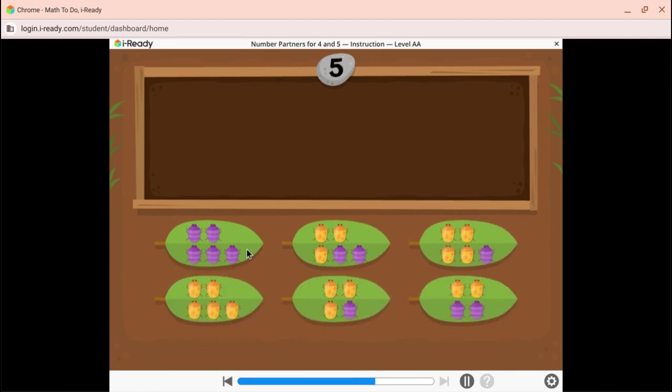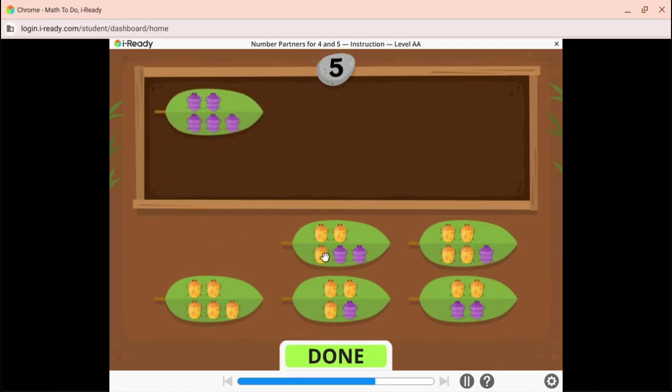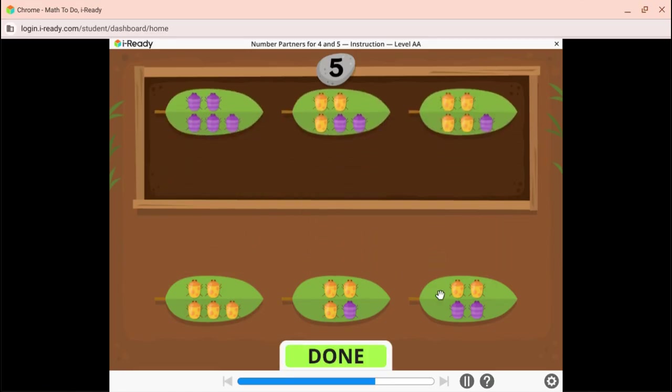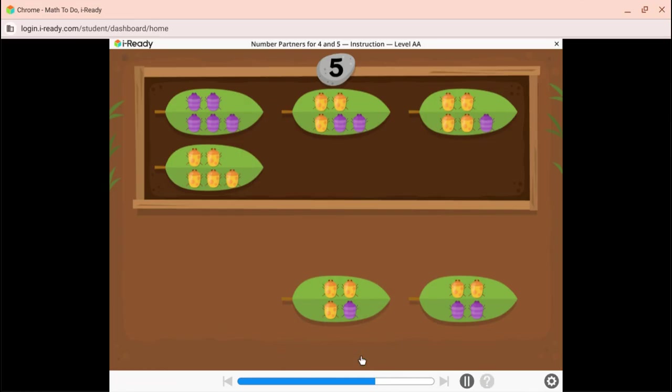Put all the leaves with five bugs into the box. Almost! There are more leaves with five bugs. Keep looking! Fired up! These are all the leaves with five bugs!